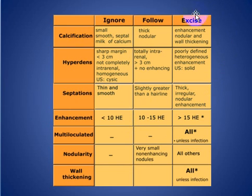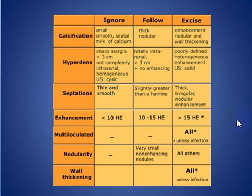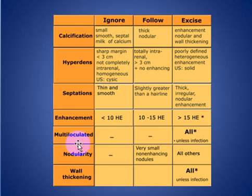In general, we can ignore, follow, or excise. Types 1 and 2 we can ignore. Type 2F and Type 3 we can follow. Type 4 we excise. The criteria we should look for are: calcification, hyperdensity, septation, enhancement (usually more than 15 HU), and multiloculation — these should be excised. Nodularity with an enhancing mural nodule should be excised. Wall thickening with enhancement should also be excised.